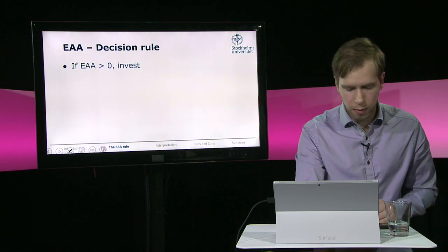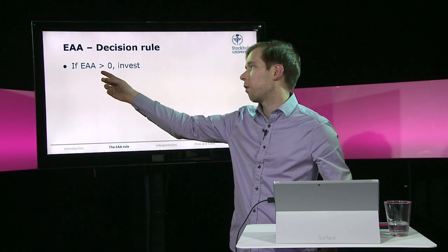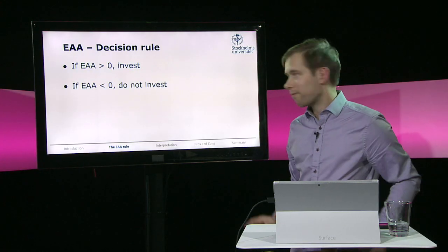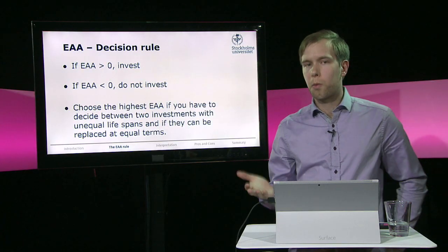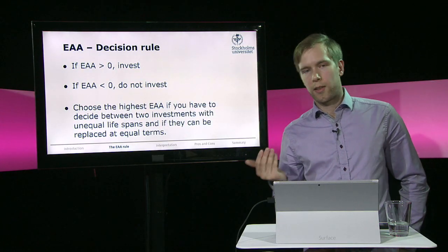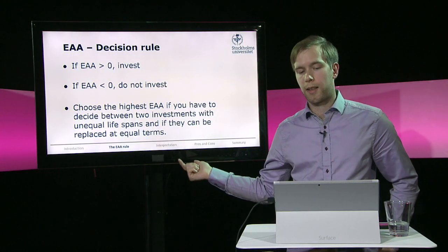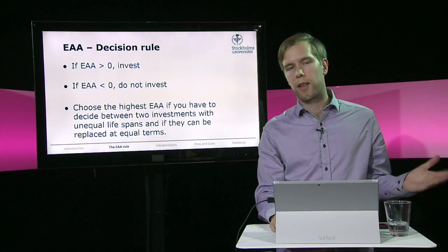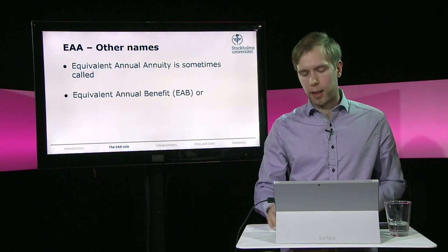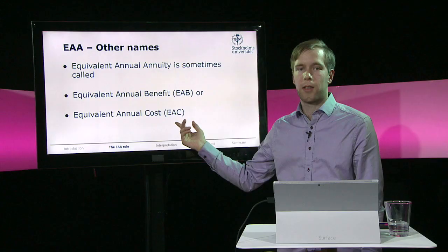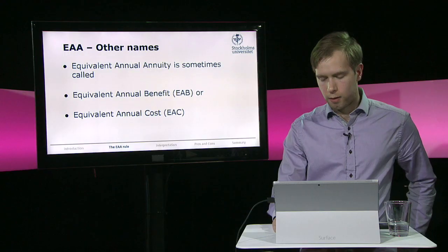The general investment decision rule for equivalent annual annuity is just like the NPV: if the EAA is greater than zero, you should invest; if it's negative, you should not invest. If you have two mutually exclusive investments which can be repeated or replaced at equal terms, then choose the one with the highest equivalent annual annuity — now you can compare investments with different lifespans. It has many names: sometimes it's called equivalent annual benefit or equivalent annual cost. They all refer to the same technique.